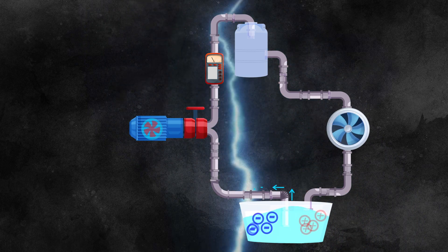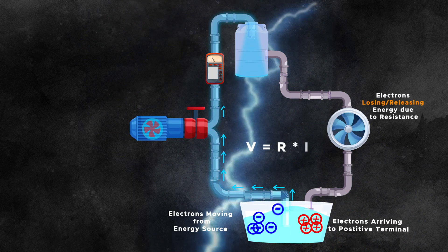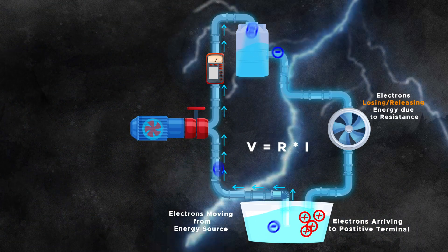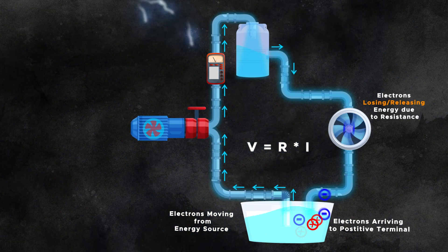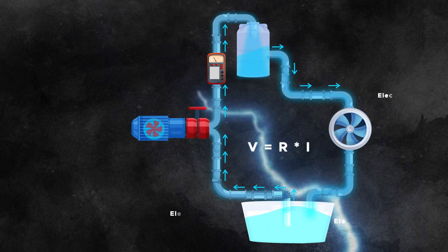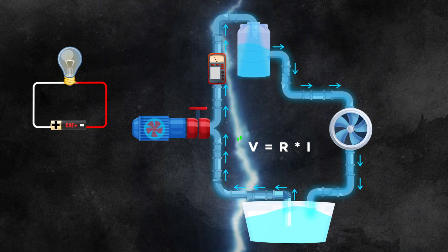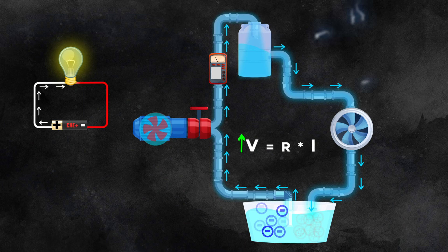If you have heard the name Ohm's law, this is where it comes into play. Ohm's law describes that the voltage equals the resistance times the current. So you can remember this formula by the word VRI. Let's examine how Ohm's law can be applied to our water cycle analogy.